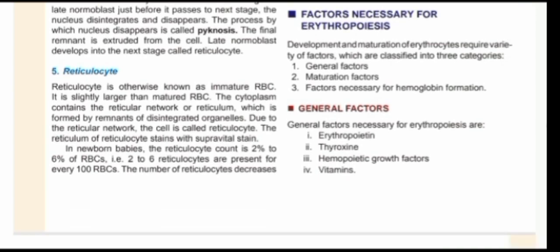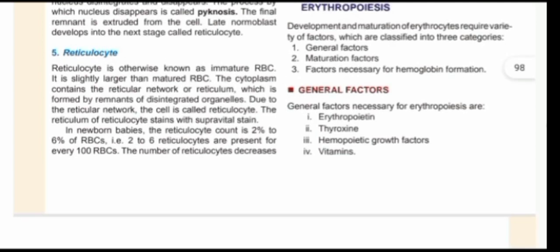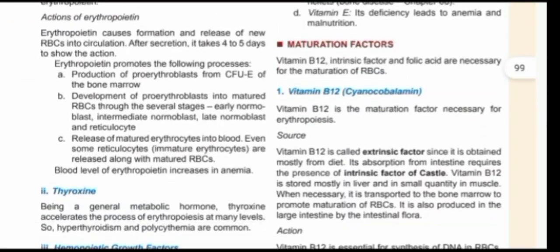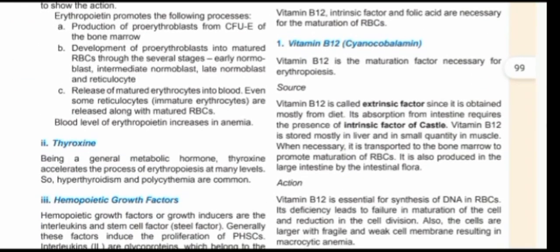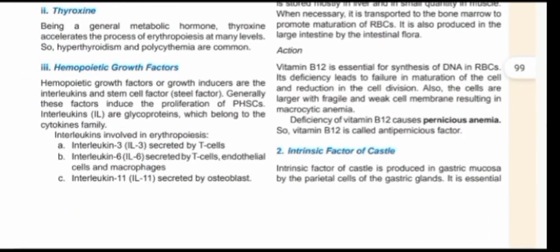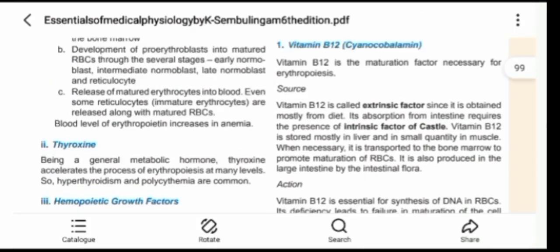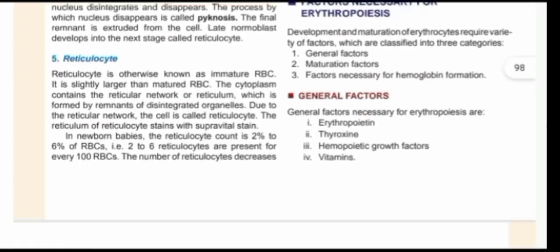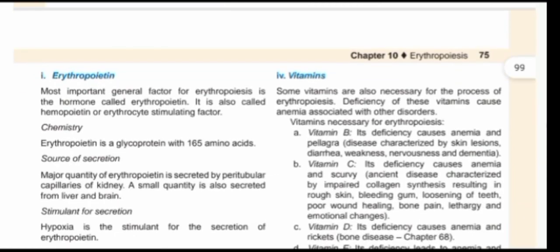The hemopoietic growth factors include various interleukins and glycoproteins — such as interleukin-3, interleukin-6, and interleukin-11. Interleukin-11 is secreted by osteoblasts. Then we have the vitamins: vitamin B, vitamin C, vitamin D, and vitamin E.